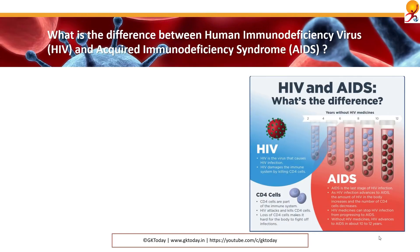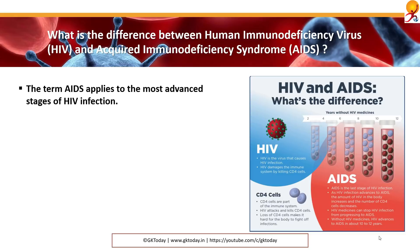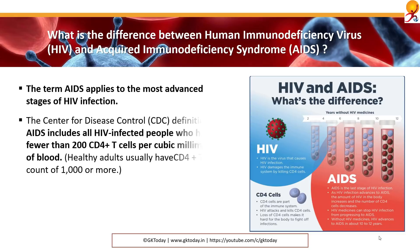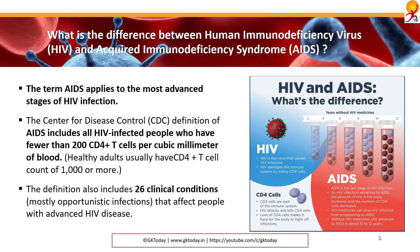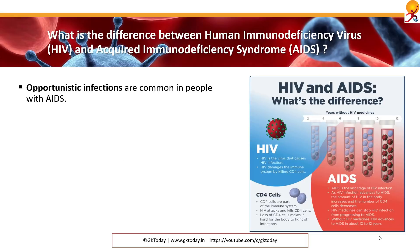What is the difference between HIV and acquired immunodeficiency syndrome or AIDS? The most advanced stage of HIV infection is AIDS. The Center for Disease Control's definition of AIDS includes all HIV-infected people who have fewer than 200 CD4+ T cells per cubic millimeter of blood — healthy adults should have at least 1000 or more. The definition also includes 26 clinical conditions, mostly opportunistic infections that affect people with advanced HIV disease. Opportunistic infections, which occur because the immune system is compromised, are common in people with AIDS.